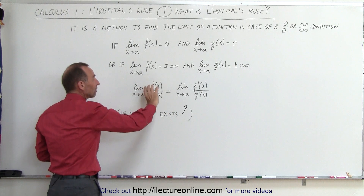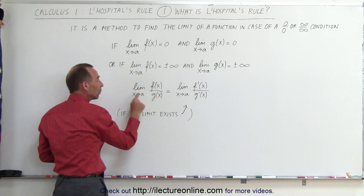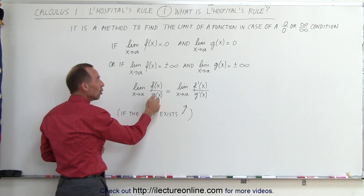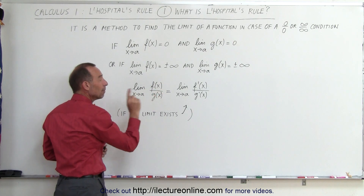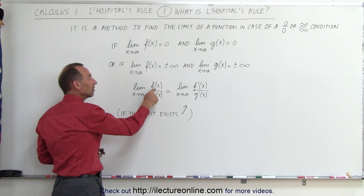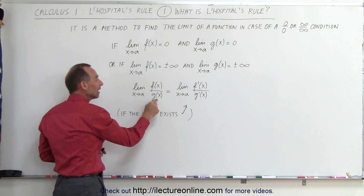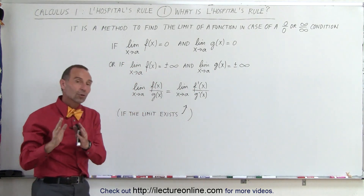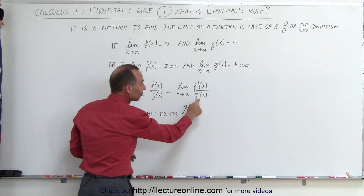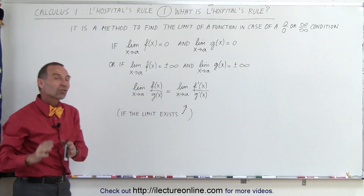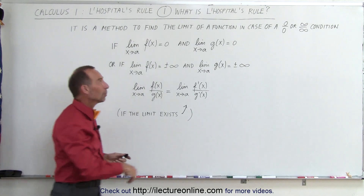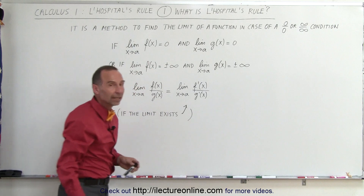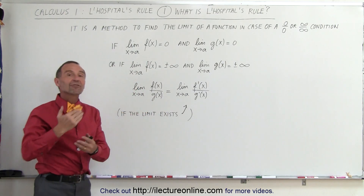So when we take the fraction f of x divided by g of x and let x approach that particular value of a, we'll either get 0 divided by 0 or infinity divided by infinity. But if we then take the derivative of f of x and the derivative of g of x, we can find the limit of that function when we let x approach a — of course, only under the condition that that limit actually exists. So there are many cases where you cannot find the limit because you end up with a 0 divided by 0 or infinity divided by infinity condition, but if you take the derivative, you can find the limit.